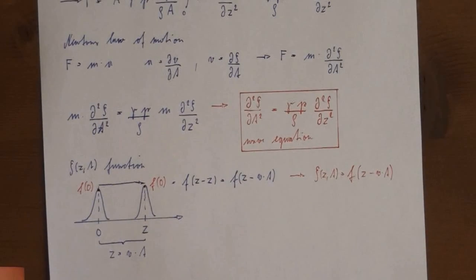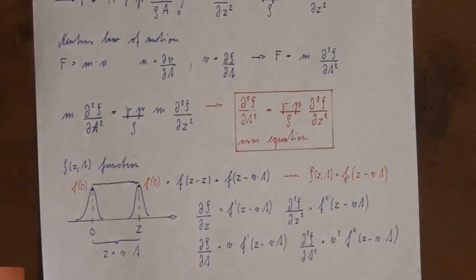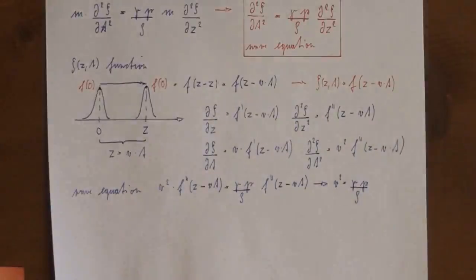You are probably itching to substitute the zeta function in the wave equation. So we calculate the second derivative of zeta with respect to both z and t and call the tune. We can cancel the functions and arrive at the equation for the speed of sound.